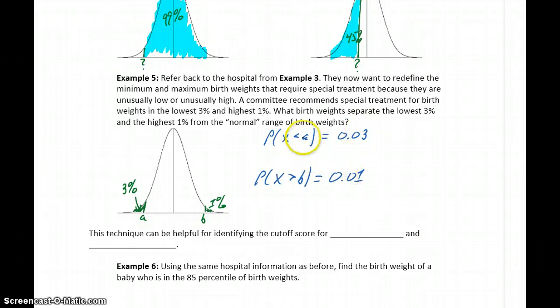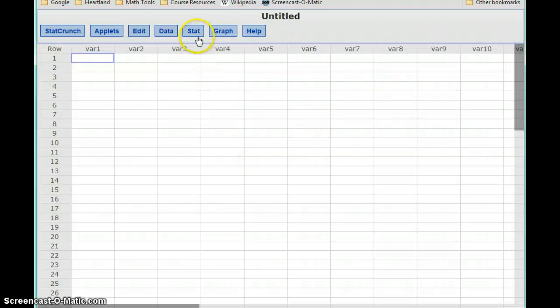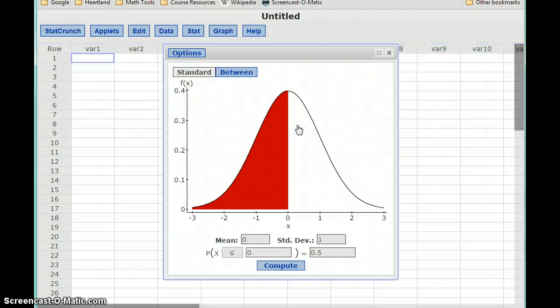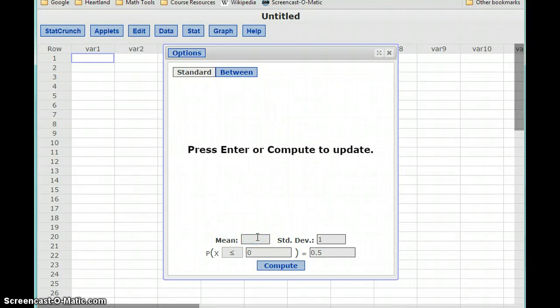So, given these percentages, what numbers make those cutoffs? So we can go back to StatCrunch, access the normal calculator. We're going back to the previous example with birth weights. So if we look back at example 3, we could get the mean of our distribution, which is 3,420, and the standard deviation, which is 495.